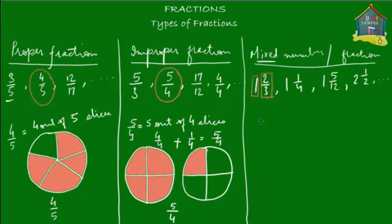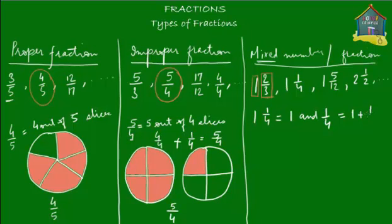What does 1 and 2 thirds or 1 and a quarter mean? Take 1 and 1 upon 4 — when you say 'and' it means plus, so it's a sum of the whole number and the fractional part. So 1 and 1 upon 4 is really 1 plus 1 upon 4.